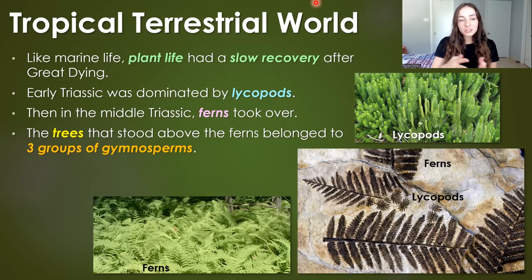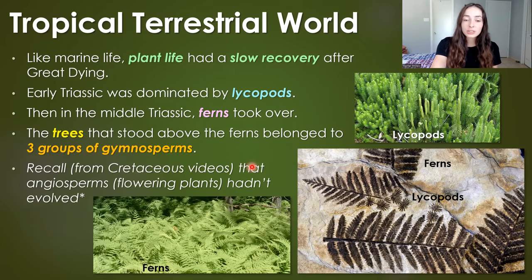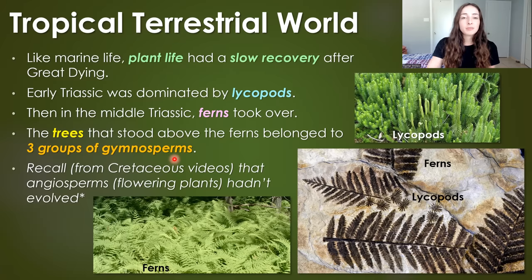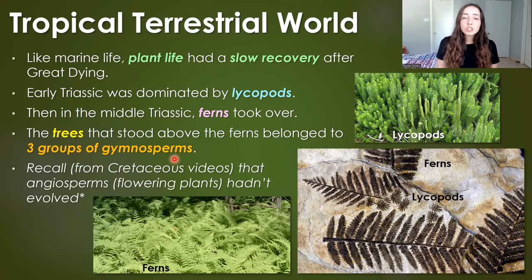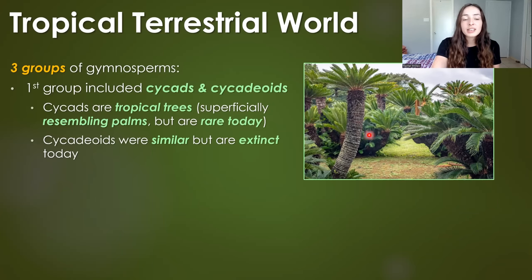As plant life continued to recover and spread throughout the Triassic period, the trees that stood over these ferns belonged to three groups of gymnosperms. Recall that angiosperms, or flowering plants, hadn't evolved yet — so gymnosperms, things like pine trees and other conifers, represented all the land trees. Other than the fact that there were no flowers, it would have looked somewhat similar to today. The first group of gymnosperms included the cycads and cycadeoids. Cycads are tropical trees superficially resembling palms, but they're rare today. Cycadeoids were similar to them but are now extinct.